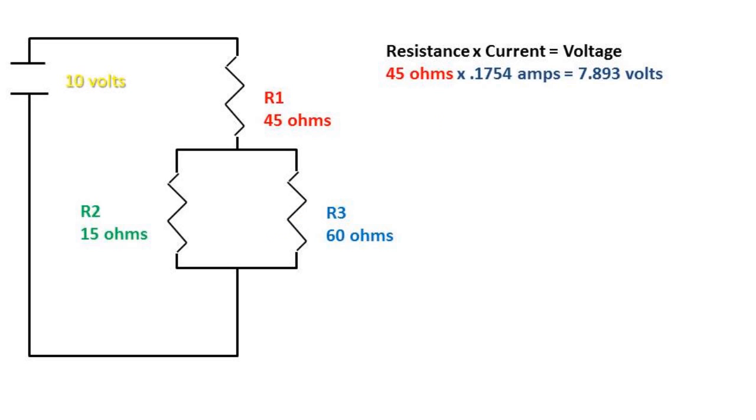If we go back to our original circuit, we can see logically that the total current goes through resistor one. So if we multiply resistor one times the total current, we get the voltage of resistor one. In this case, it equals 7.893 volts.